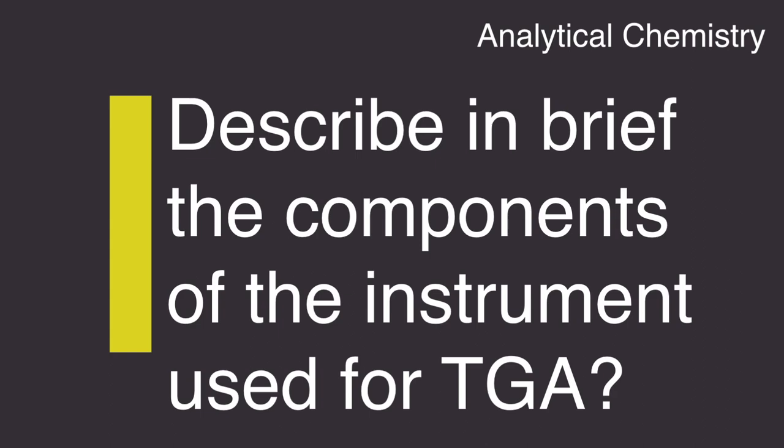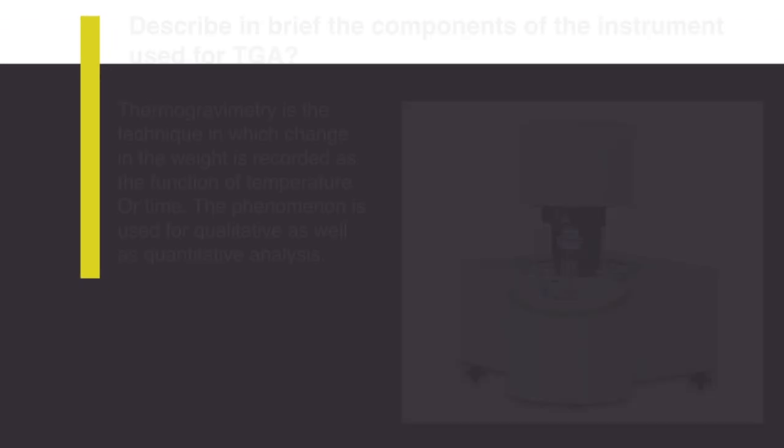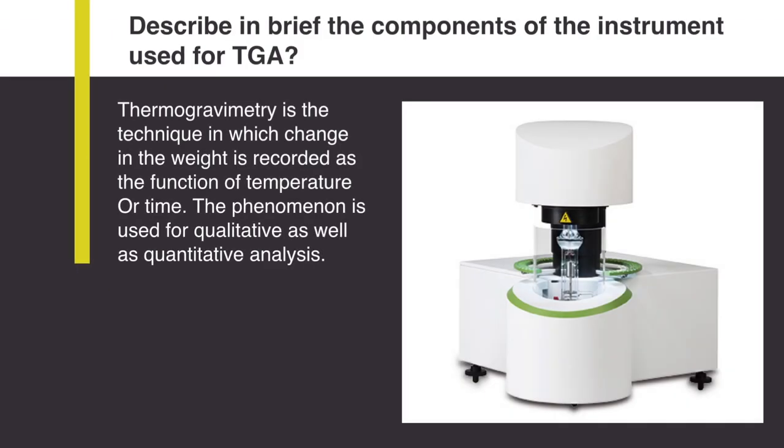Describe in brief the components of the instrument used for thermogravimetric analysis. Thermogravimetry is the technique in which change in the weight is recorded as a function of temperature or time. The phenomena is used for qualitative as well as quantitative analysis.